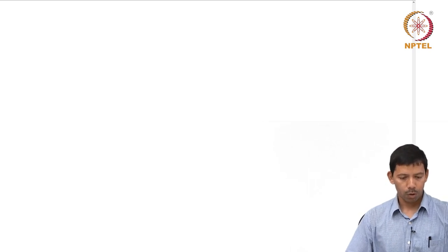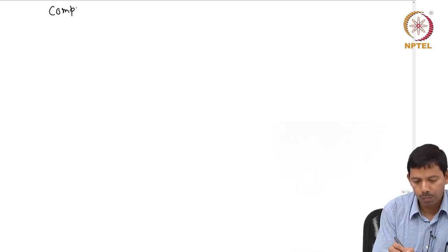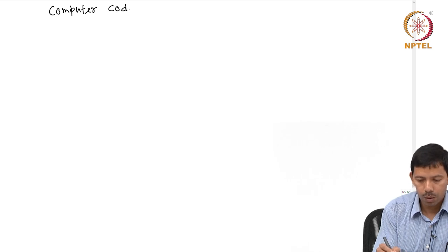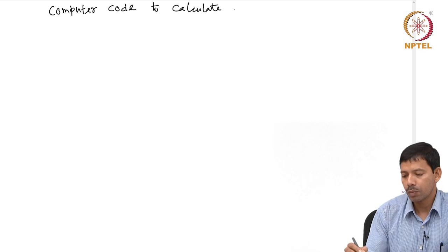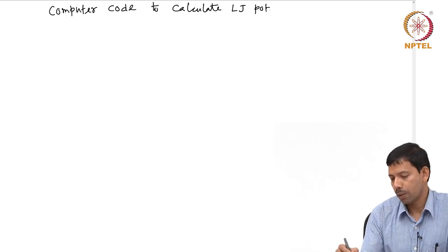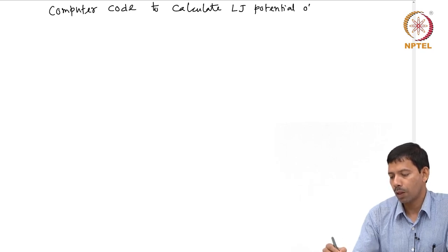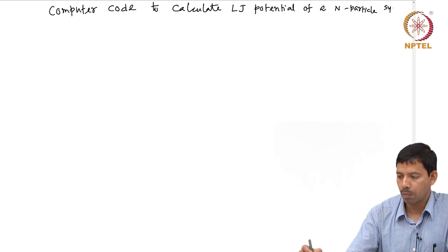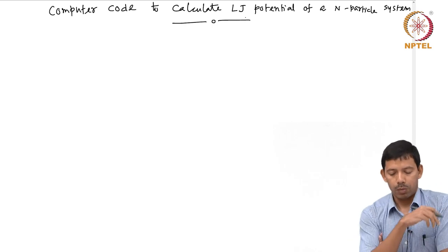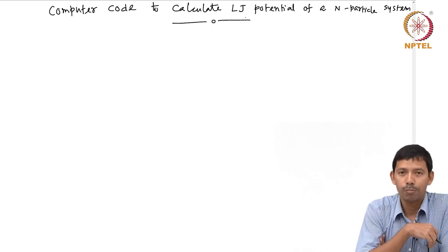Let us write a computer code — what will be the logic of a computer code to calculate the Lennard-Jones potential for a system of n particles. I am writing this in Fortran 77.